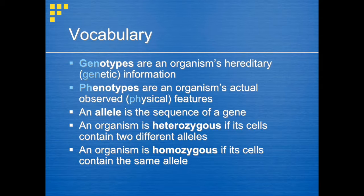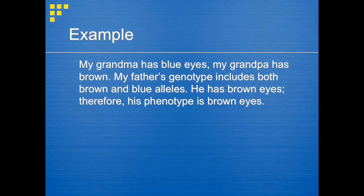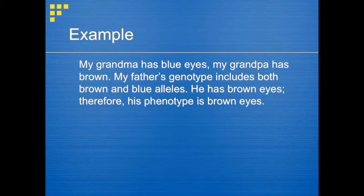So how would we use all these terms to describe an organism's traits? Let's go back to eye color as an example. My grandma has blue eyes and my grandpa has brown eyes. That means my father's genotype — his hereditary information — includes both brown and blue alleles. My father has brown eyes, therefore his phenotype, his actual observed feature, is brown eyes. Seems pretty confusing, right?